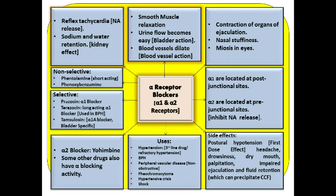Looking at the uses of alpha blockers: they are used in hypertension as a third-line agent, not first-line, or in cases of refractory hypertension. Prazosin or related drugs can be used. In benign prostatic hypertrophy, once-daily terazosin or the more specific tamsulosin can be used effectively. Remember that these drugs do not halt disease progression — they provide only symptomatic relief, typically within one to two weeks of starting treatment.